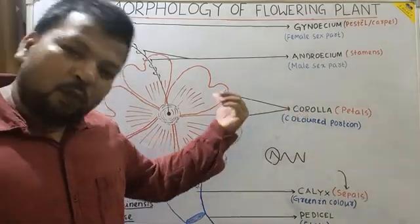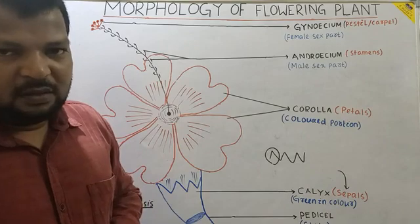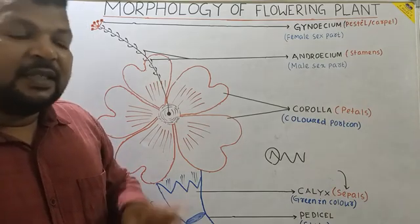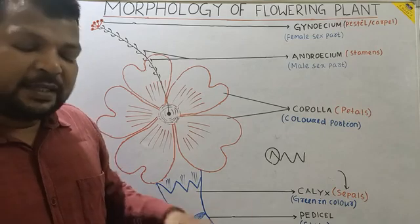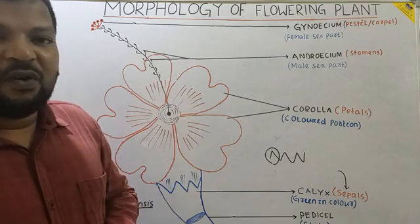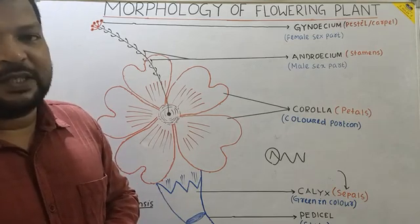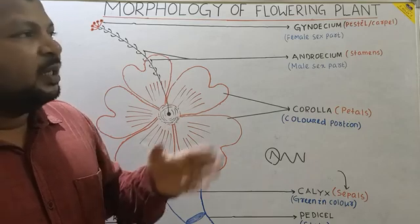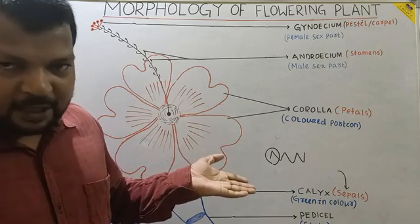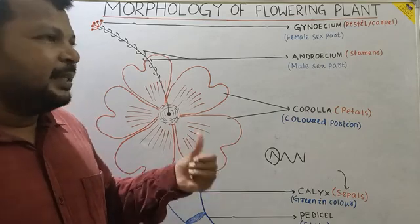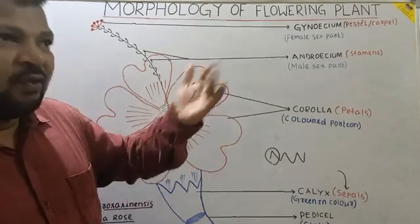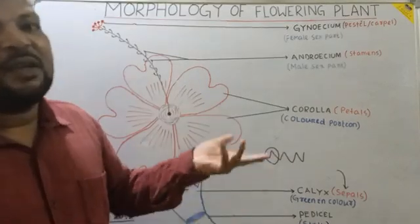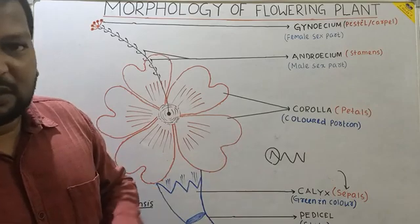Why is the corolla present in different colors? Different colors attract insects for pollination. The colorful petals attract insects, and the insects move from flower to flower, thereby facilitating insect pollination.